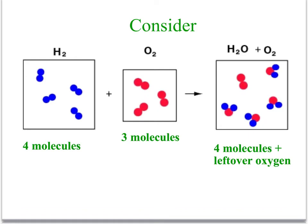Consider the reaction where we have four molecules of hydrogen reacting with three molecules of oxygen. In this reaction, we do not have the perfect ratio. The most that can be produced is four molecules of water, and there is one molecule of oxygen left over. So in this case, hydrogen is limiting and oxygen is excess.